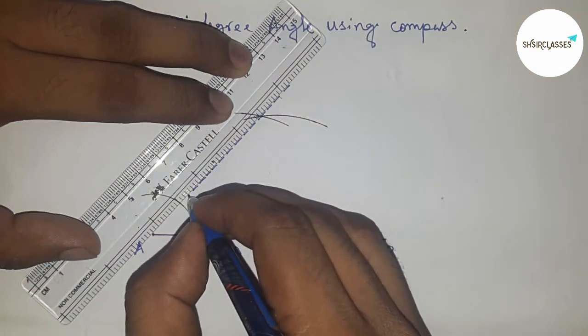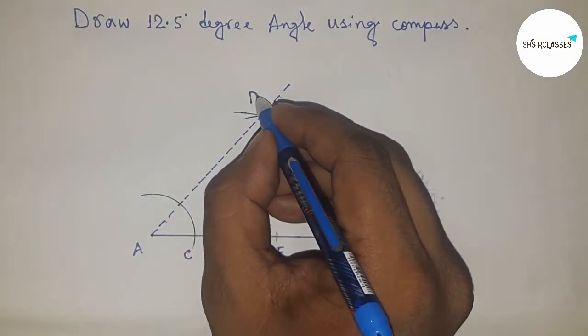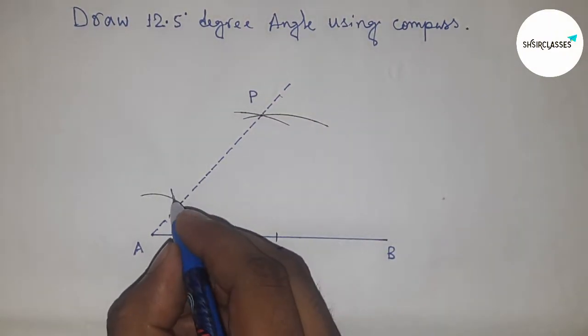We now have a 50 degree angle. This is point P, so angle PAB is 50 degrees, and this is point F.